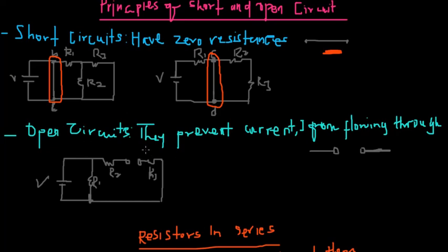Now let's look at open circuits. Open circuits are circuits that prevent current from flowing through them. This is how we represent open circuits — you can see that they are open. There is a wire, and another wire, but the wires have been disconnected, so you can say that open circuits are disconnected wires.